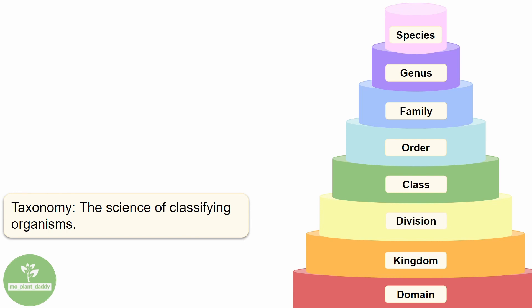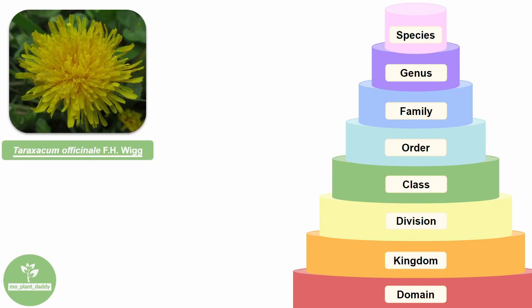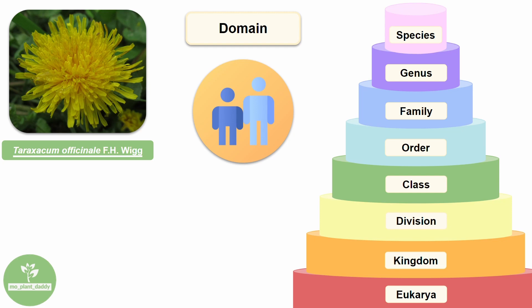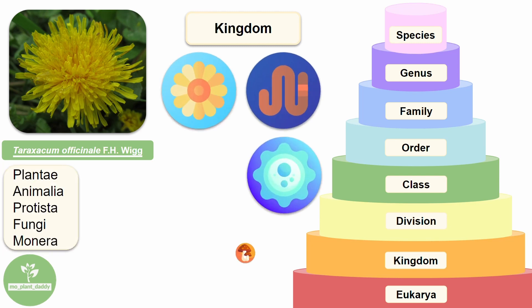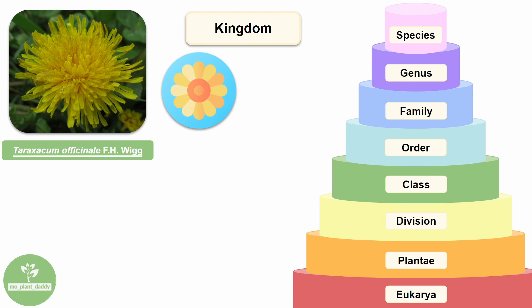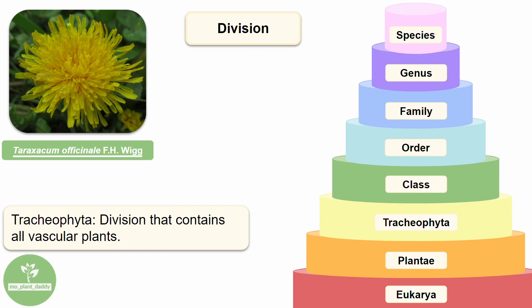To better understand this, let's take a look at an example species: the common dandelion, otherwise known as Taraxacum officinale F.H. Wigg. The first and largest hierarchical rank is domain. There are three domains — Eukarya, Bacteria, and Archaea. A dandelion is a eukaryote, which means that somewhere down the line, the common dandelion is more closely related to you and I than to a bacterium or archaean. We can break Eukarya into smaller kingdoms: Animalia, Plantae, Protista, Fungi, and Monera. A dandelion is a plant, so it belongs to Plantae. Plantae can be broken down into several smaller divisions, and the one we're focused on is Tracheophyta, which contains all vascular plants.